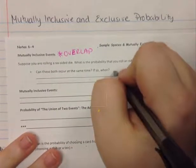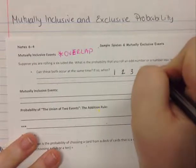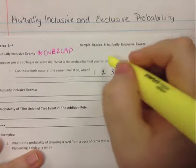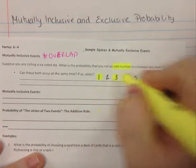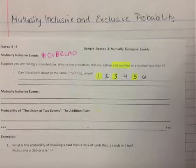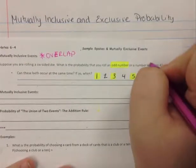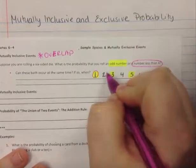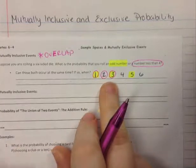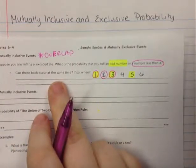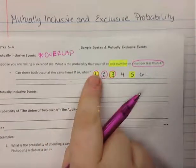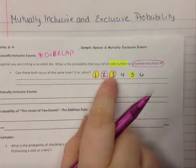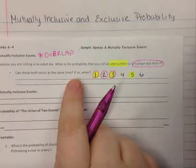We have a six-sided die, so we have one, two, three, four, five, and six. I'm going to highlight in yellow our odd numbers — that's one, three, and five. Then we also want to focus on the probability of a number less than four. I'm going to circle that in pink. The numbers one, two, and three are all less than four.